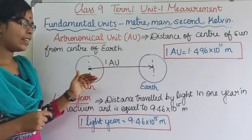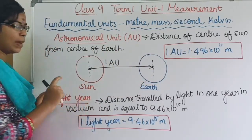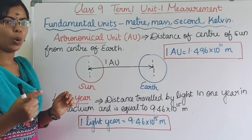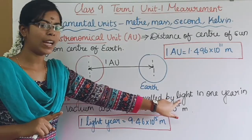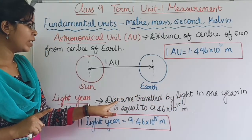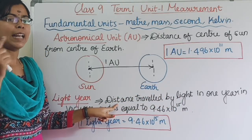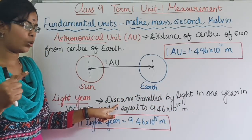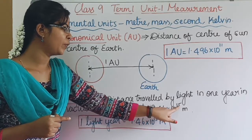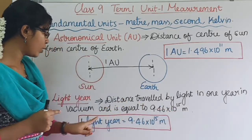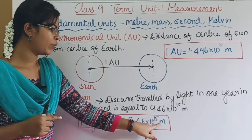Next, light year: light travels in 1 year. This value in meters — light travels for 1 year, so 1 light year is equal to 9.46 × 10 power 15 meters.